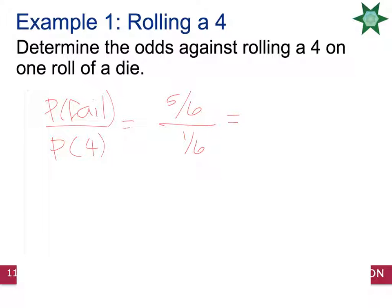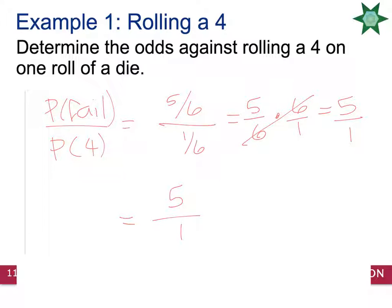We typically don't like to divide fractions, so we'll do what's called copy-dot-flop. When you do that, the 6s will cancel, and your odds against rolling a 4 on a die is 5 to 1. A lot of people will shorthand that and say there's only one 4 on the die and there are 5 numbers that aren't — those are the odds against rolling a 4.